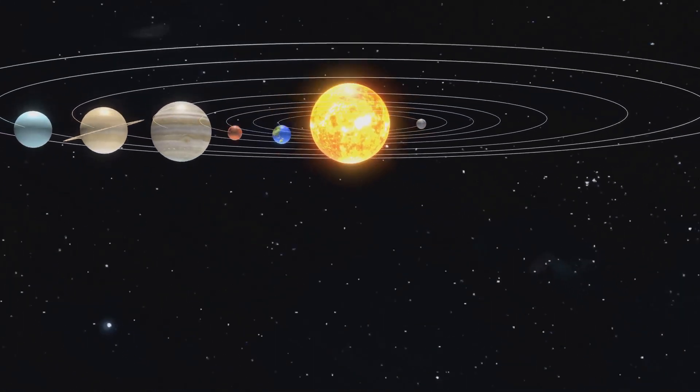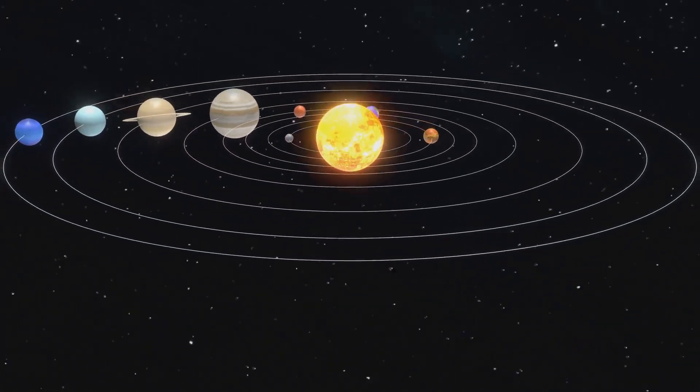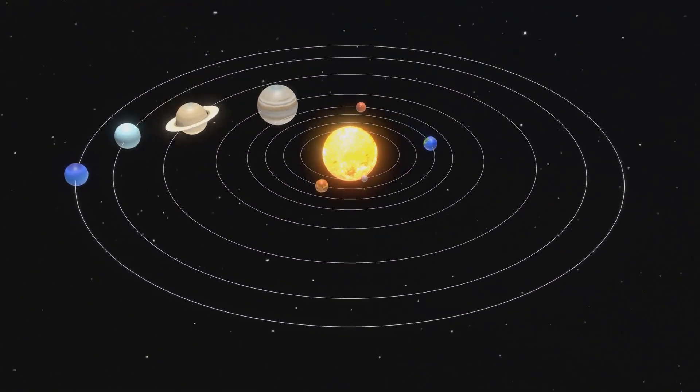Orbiting the sun are eight planets: Mercury, Venus, Earth, Mars, Jupiter, Saturn, Uranus and Neptune, each one unique in its own way.